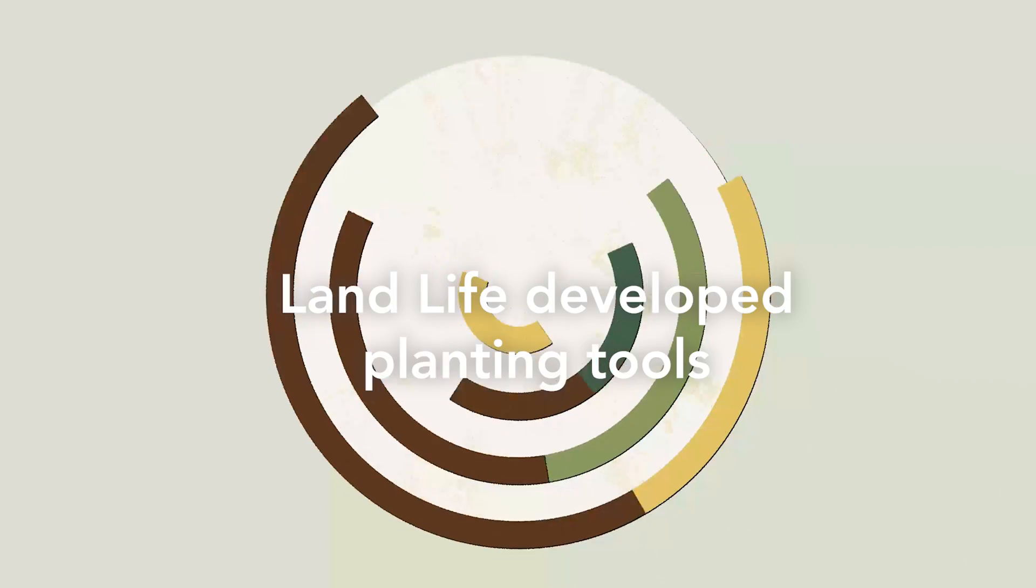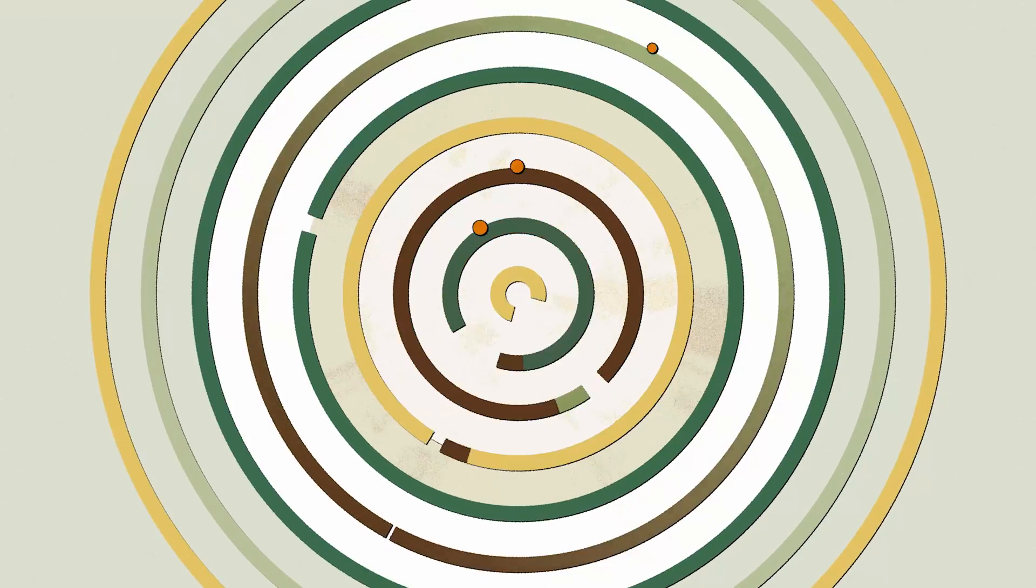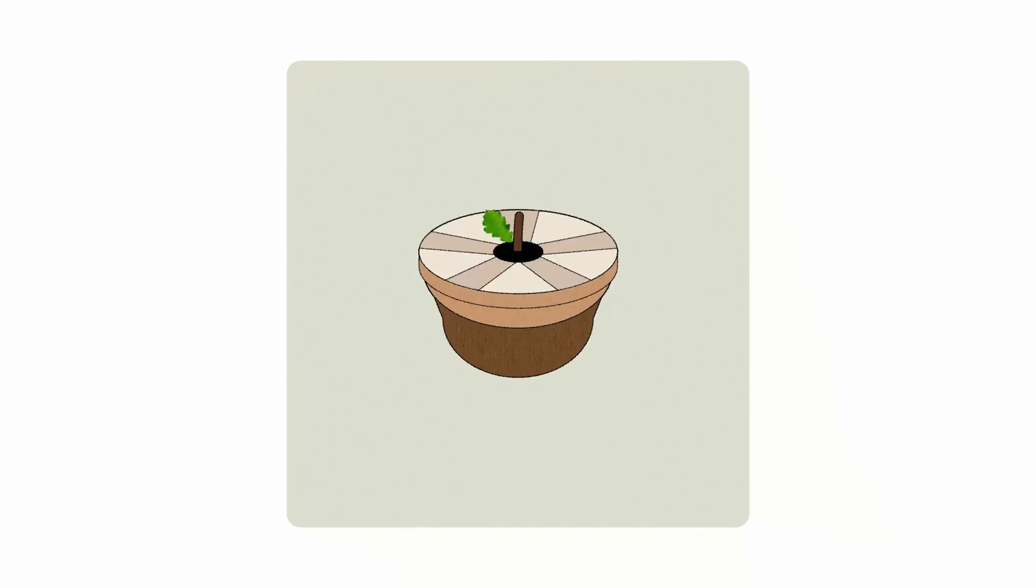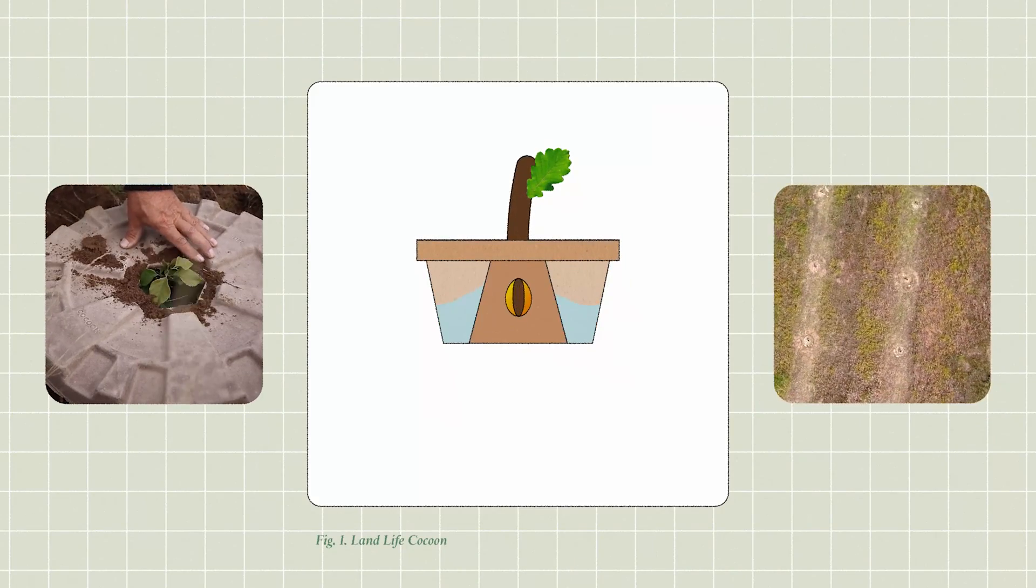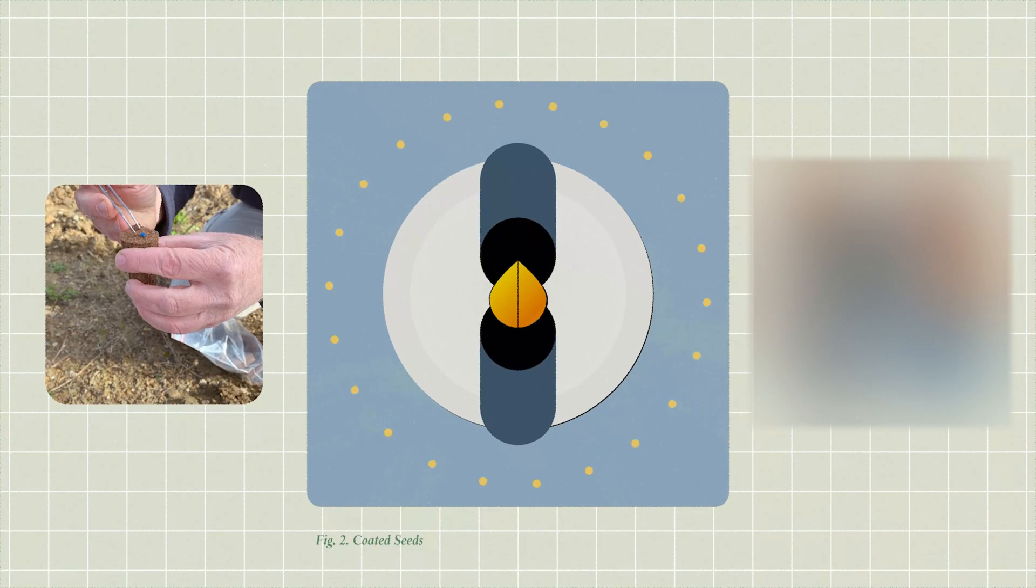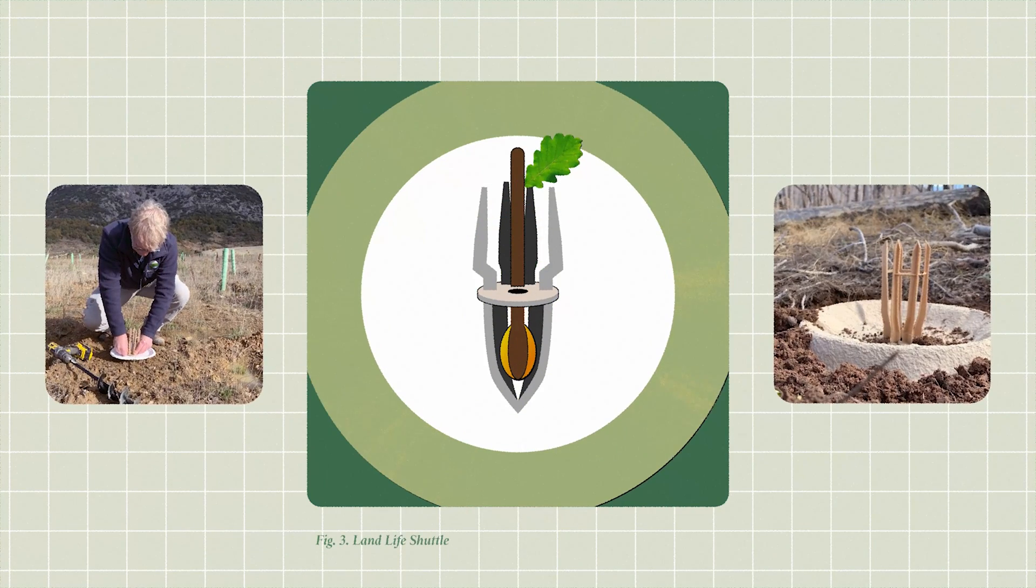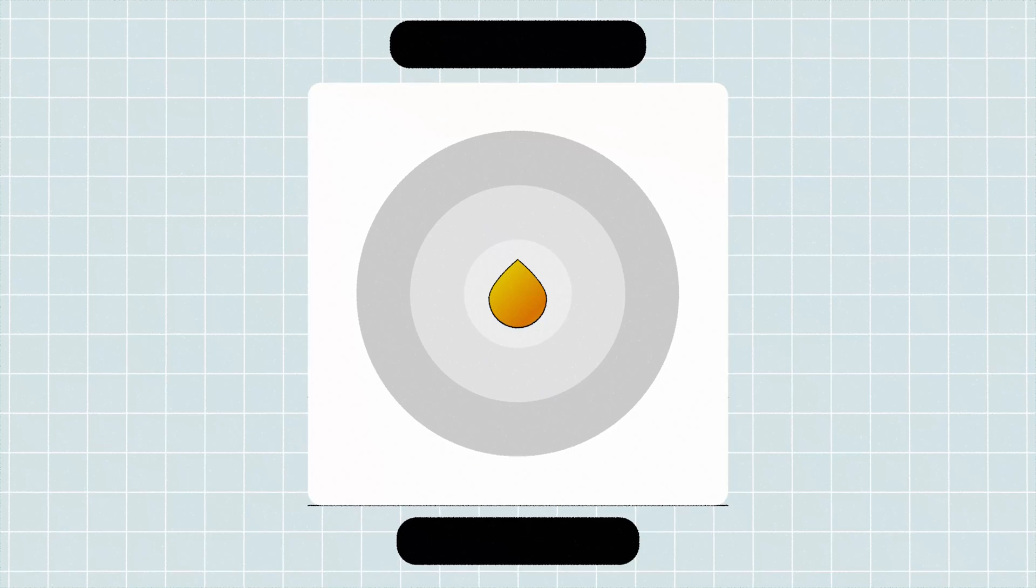Landlife developed planting tools that speed and scale up our impact, still simple, but tailored. From the cocoon that brings much-needed water to arid regions, to technologies that bring the tree nursery to the field, with smart-coated seeds, improved seedling incubators, and automated planting vehicles.